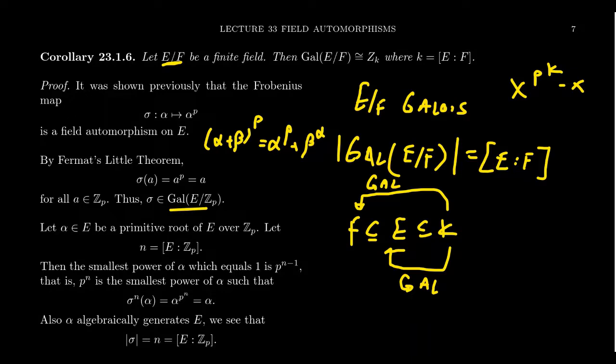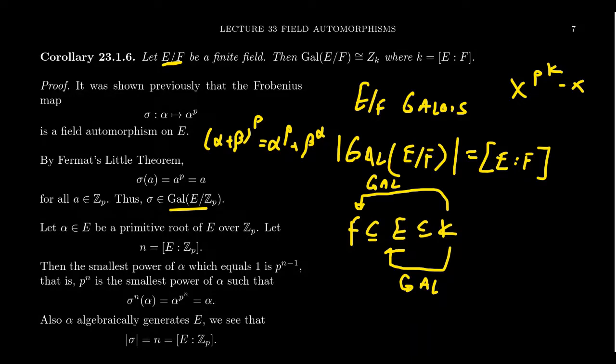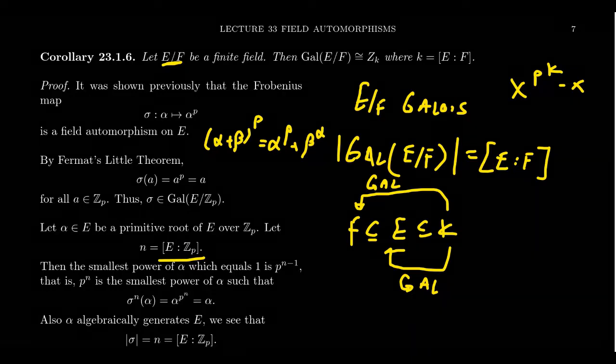This Frobenius map sigma belongs to the Galois group of E over Z_P. That's not the Galois group of E over F necessarily, but notice it's going to be in there. We know from a previous result that there's a primitive root inside of E. There is some element alpha, so that any power of alpha, you'll eventually get all of the elements in E. So alpha is a primitive root in E over Z_P. When you look at this extension, the extension of E over Z_P, let's call that degree N.